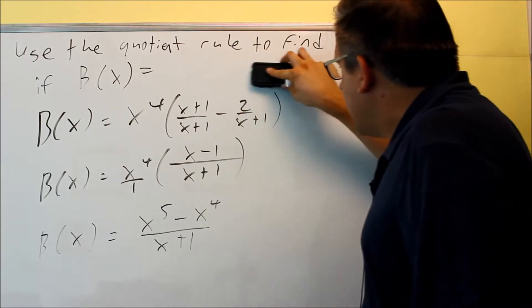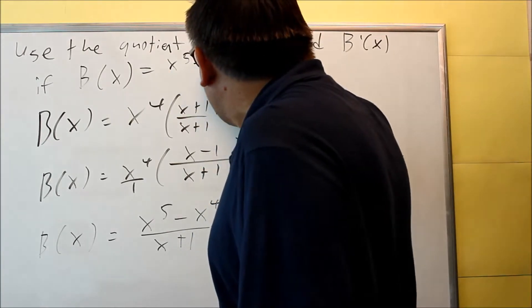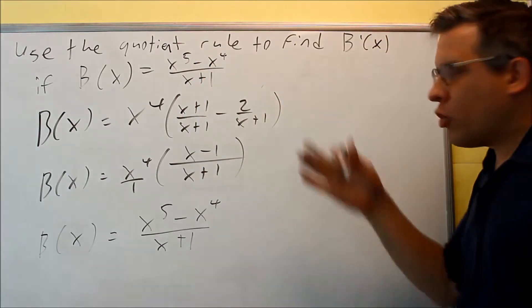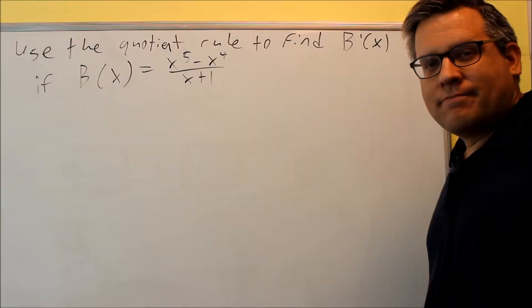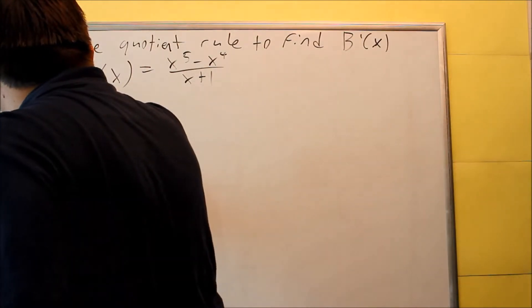So, what I'll do now is I'm just going to go ahead and change this one. Since we went through all that work already, I'm going to go ahead and put it back to this. x to the fifth minus x to the fourth over x plus 1. And now, I'll proceed with the problem by using the quotient rule. Okay, now we're ready for the quotient rule. Let's do that here, so we have b primed.